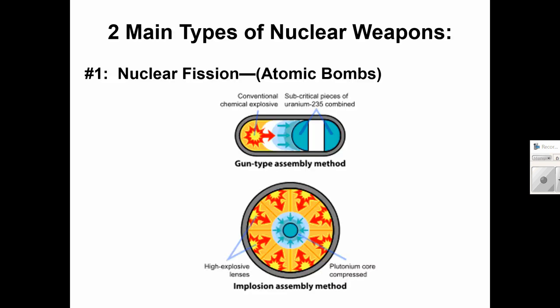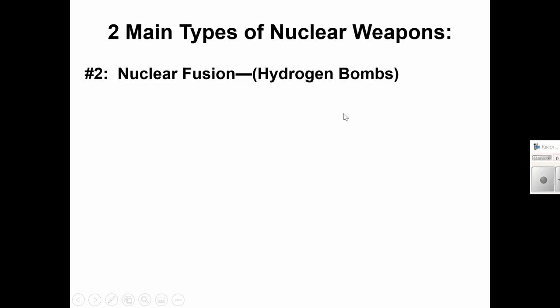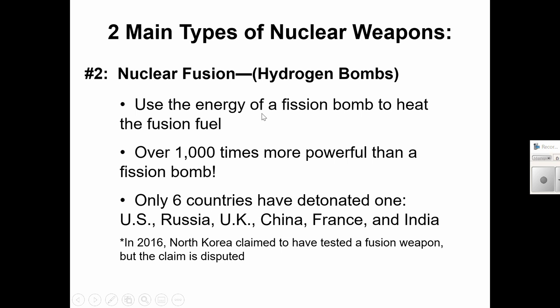The two main types of nuclear weapons are, of course, what we've discussed, the fission bombs. And there's also fusion bombs. Only six countries have detonated one. I talked about this earlier, how they're a thousand times more powerful than a fission bomb. So, the six countries that have detonated one are the United States, Russia, the UK, China, France, and India. In 2016, North Korea claimed to have tested a fusion weapon, but this claim has been disputed.